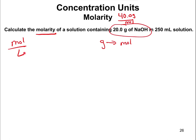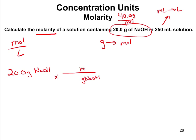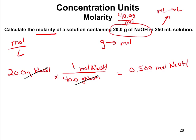For molarity we also need liters, but we have milliliters. So we take 250 milliliters and convert to liters. We start with 20.0 grams of NaOH and convert to moles: 20.0 grams × (1 mole / 40.0 grams) = 0.500 moles of NaOH. Grams cancels with grams, leaving an answer in moles. Then 250 milliliters × (1 liter / 1000 milliliters) = 0.250 liters.